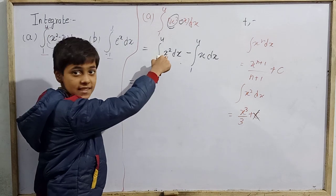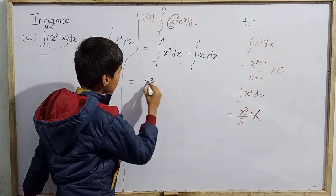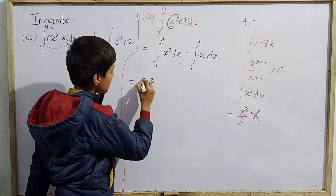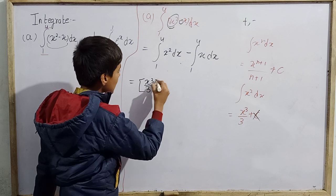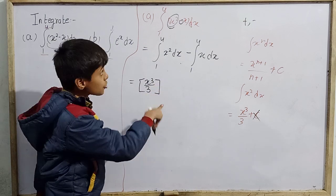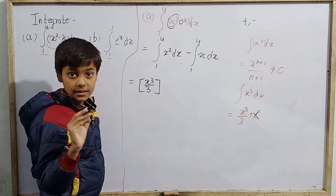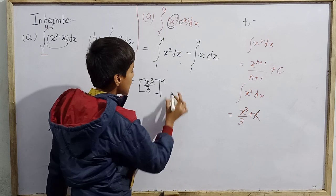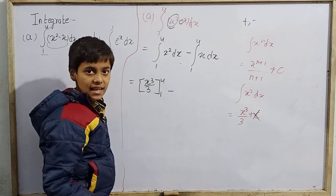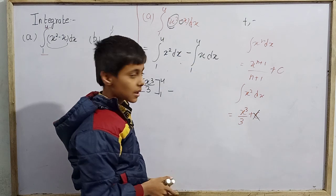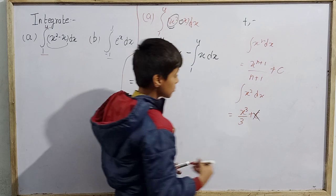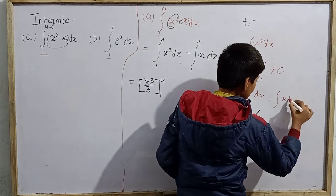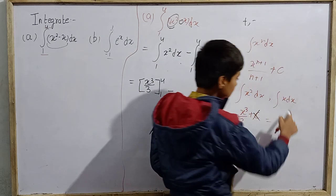Integrating x² gives x³/3, shown in square brackets with limits. Minus: integrating x gives x²/2, because x is x^1, so 1+1=2, giving x²/2 — shown in square brackets with limits.